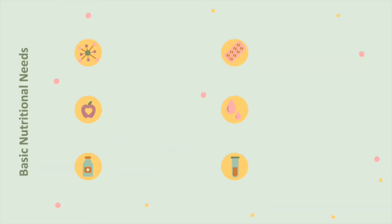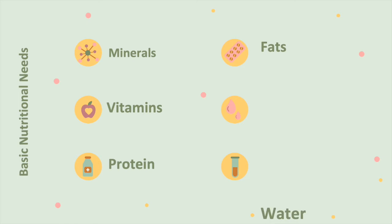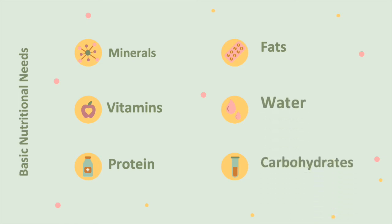The basic nutritional needs: there are six categories that are imperative to good nutrition. There must be the right amount of consumption of minerals, vitamins, proteins, fats, water, and carbohydrates.